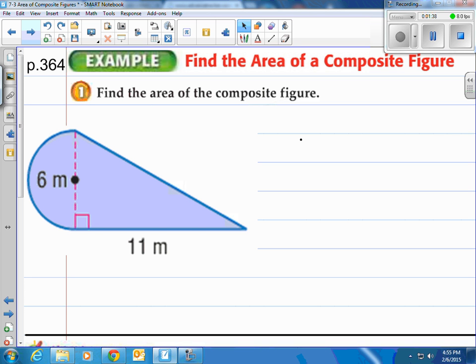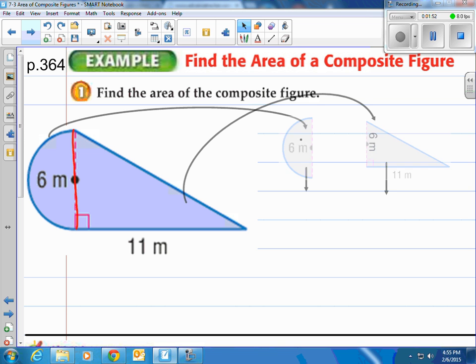Take a look at this first one here. It says find the area of the composite figure. Now I see right down that red dotted line, we've got half of a circle, and then we've got a triangle. So let's break it into those pieces, and let's find the area of each of them, and then add them together.